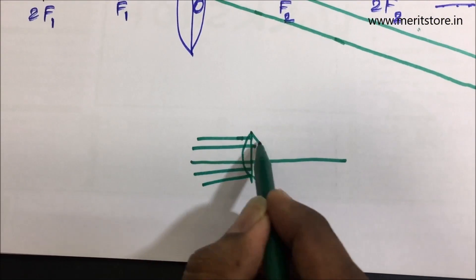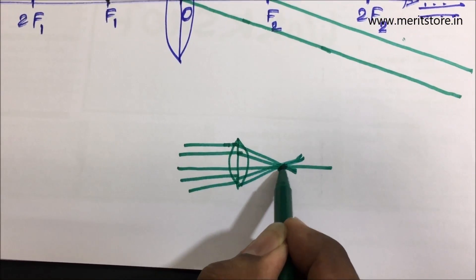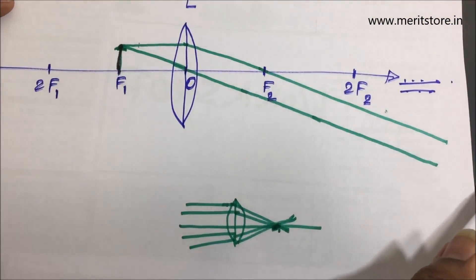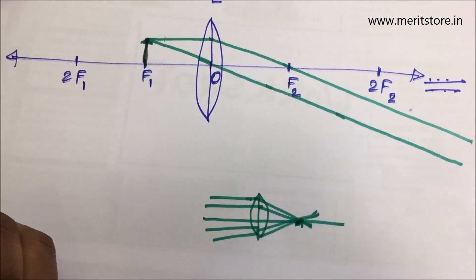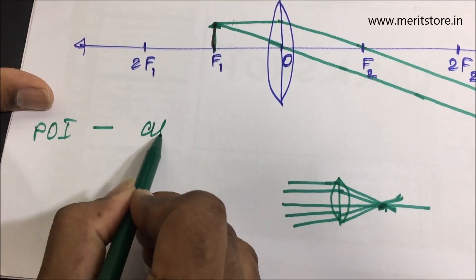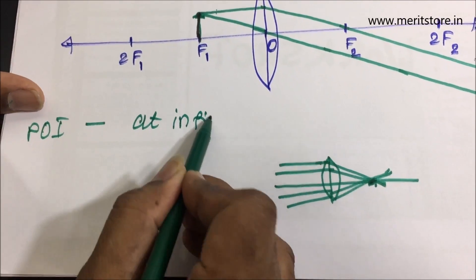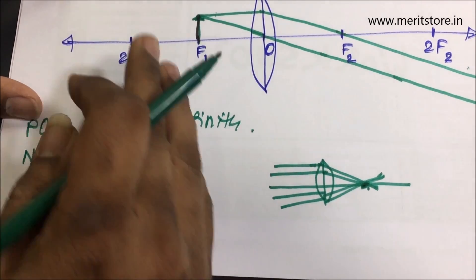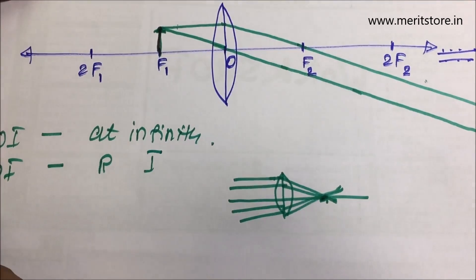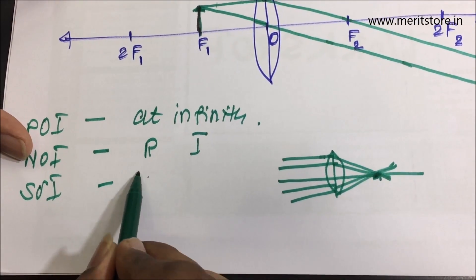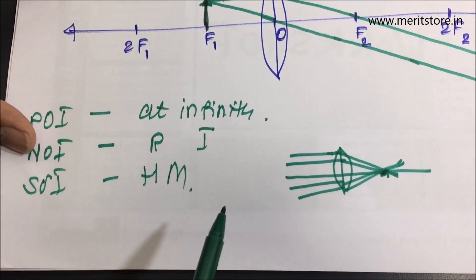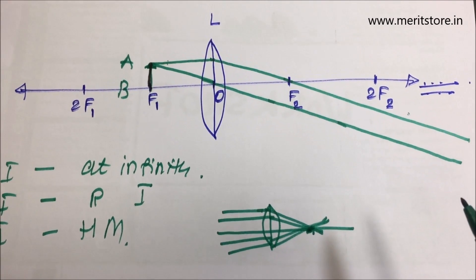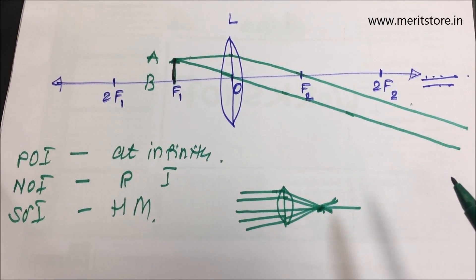This makes sense: when rays came from infinity they met at the focus; now rays come from the focus so they meet at infinity. Position of the image is at infinity. Nature of the image is real and inverted. Size of the image is highly magnified.